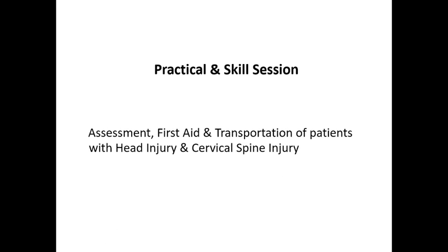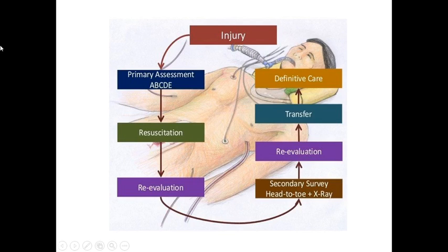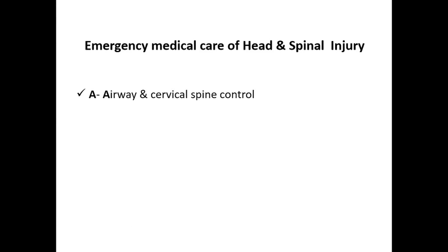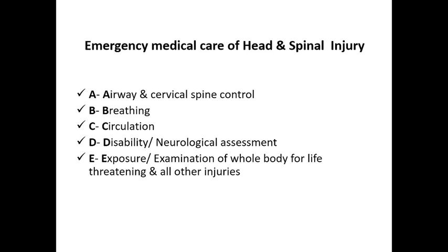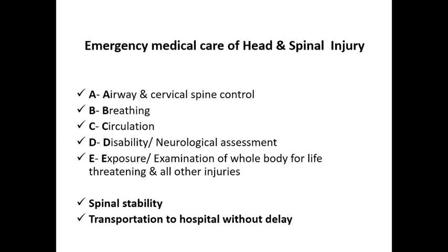Assessment and transportation for head and cervical spine injury follows this sequence: primary assessment, resuscitation, re-evaluation, secondary survey, re-evaluation, and transfer for definitive care. Emergency medical care follows ABCDE: A — airway and cervical spine control; B — breathing; C — circulation; D — disability (neurological assessment); E — exposure (examine the whole body for life-threatening injuries). Then stabilize the spine and transport the patient without delay.